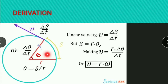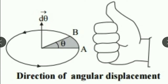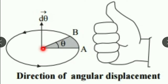What about the direction of angular displacement? We know the particle is moving in the anti-clockwise direction, so the direction of linear displacement is anti-clockwise. To find the direction of angular displacement, we use the right-hand rule: curl the fingers in the direction of motion of the particle, and the stretched thumb gives the direction of angular displacement. If the particle moves anti-clockwise, the angular displacement is directed upward; if the particle moves clockwise, it is directed downward.